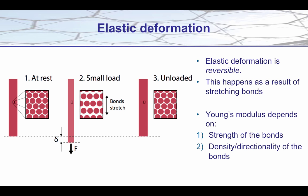Let's first look at the elastic deformation, and let's choose a metal specimen. If we had a powerful enough microscope and we could zoom in, we would see the individual atoms within the metal. These metal atoms are joined together by metallic bonds, which could be represented by little springs joining one atom to its nearest neighbour. So if we now apply a load on that metal specimen, we see that the atoms move apart ever so slightly.